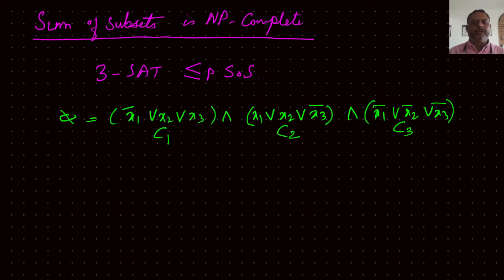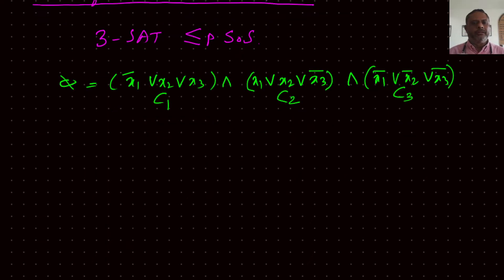Let's take the previous example where the 3SAT problem has 3 clauses C1, C2, and C3, and 3 literals X1, X2, and X3. For the table setup, we have 3 columns — one for X1, one for X2, one for X3 — and then 3 more columns: one for C1, one for C2, one for C3.